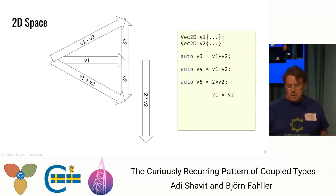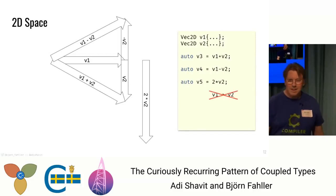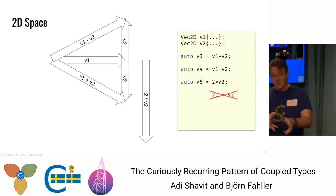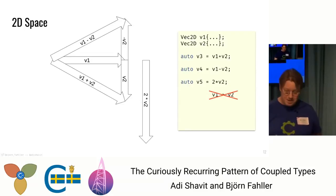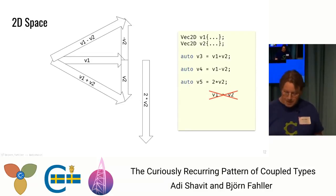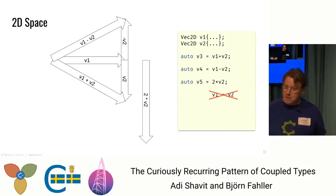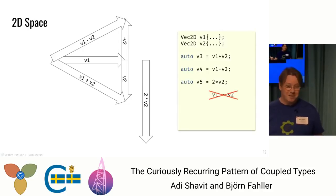We can also scale a vector by multiplying with a scalar — in this case, double its size. Or we could divide it to get it shorter. Multiplying vectors? Not in this world. In some situations that makes sense, but not here. This is clear so far, I presume — nothing surprising.